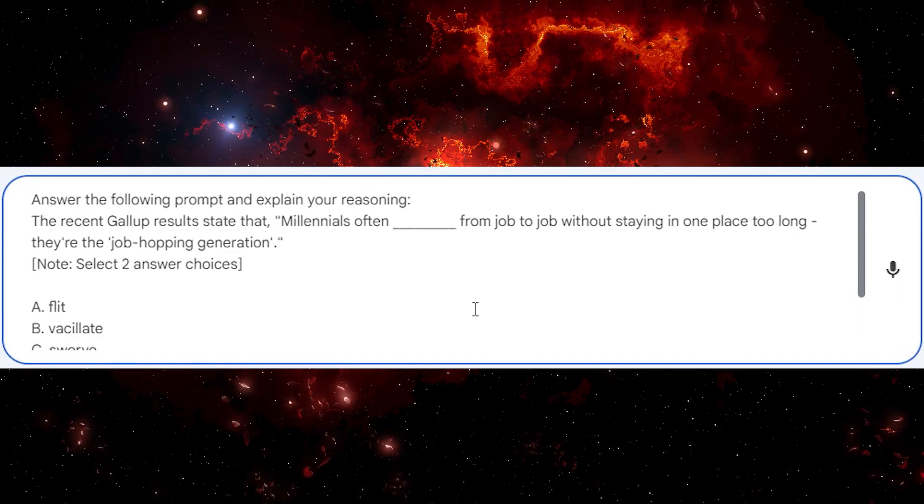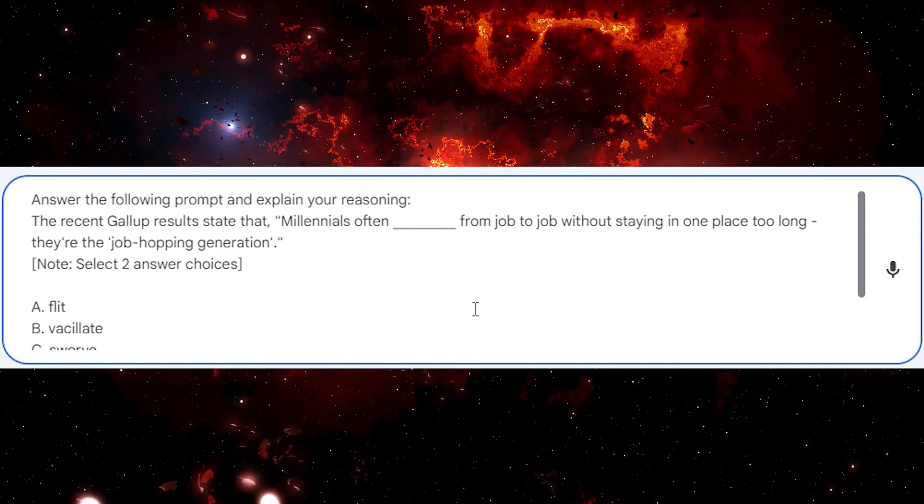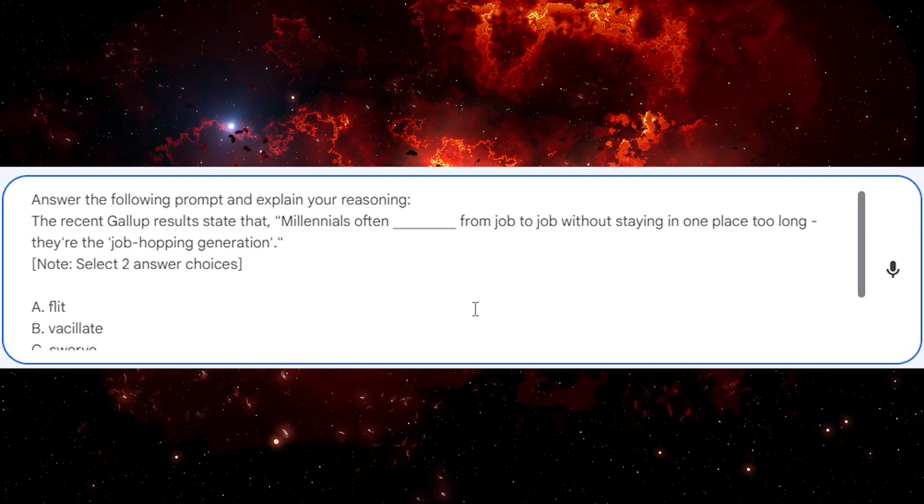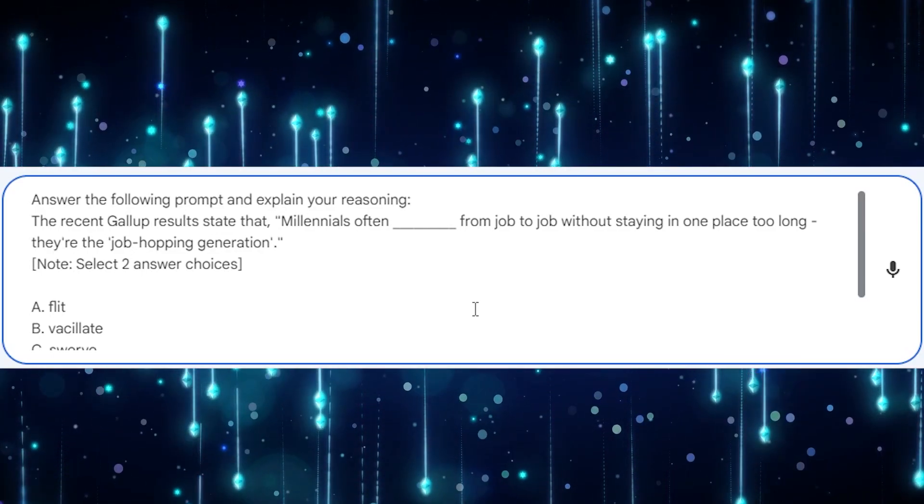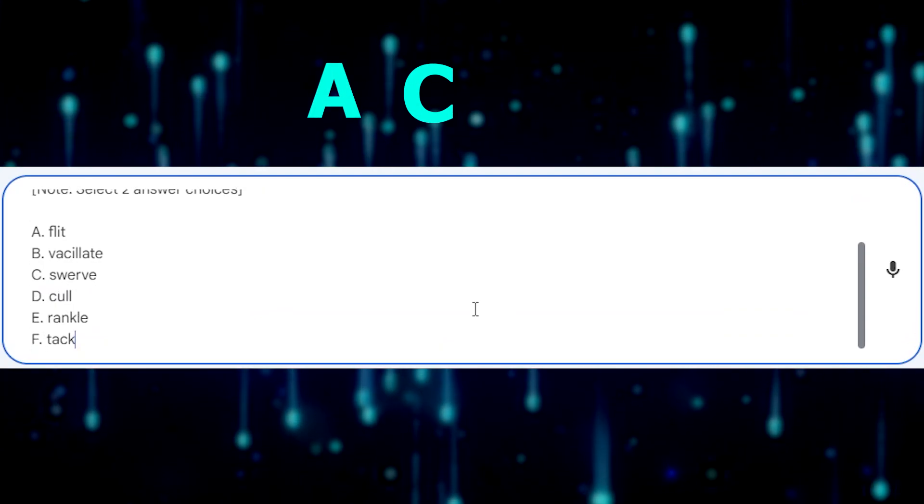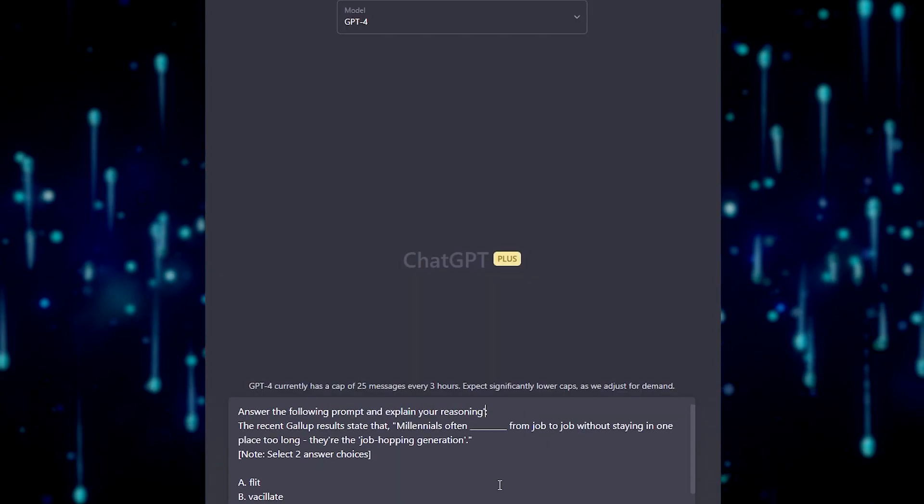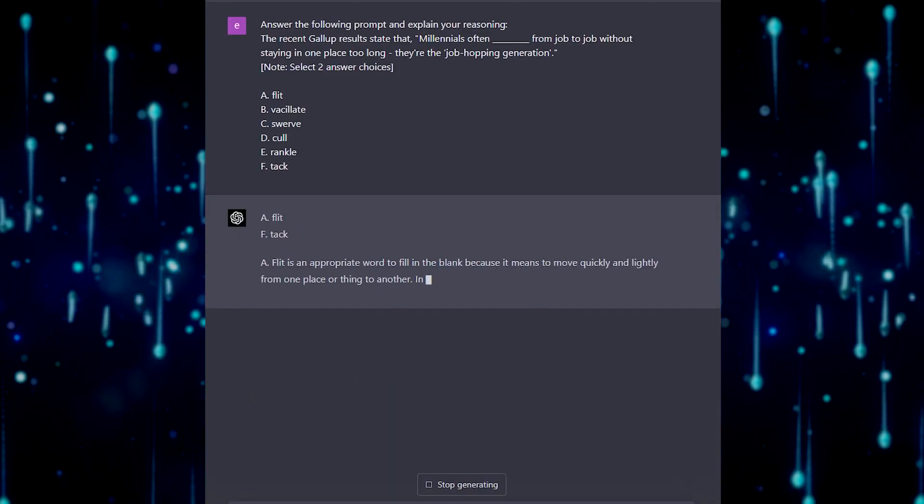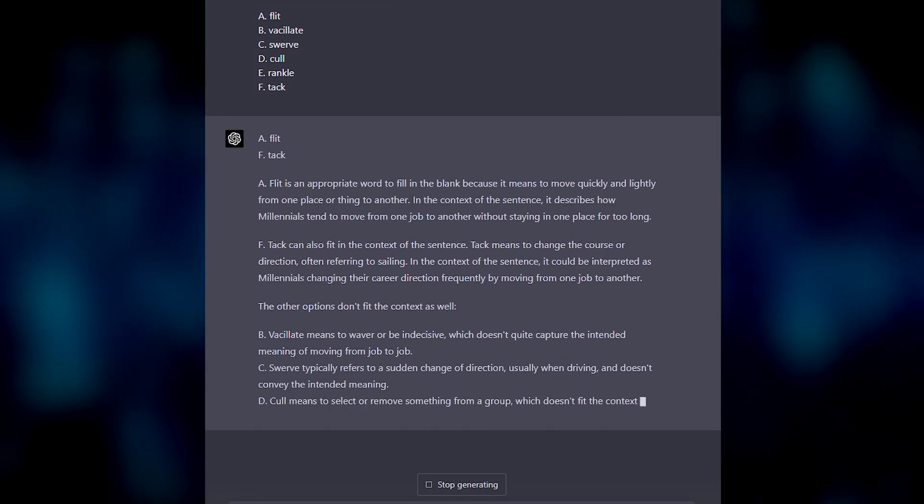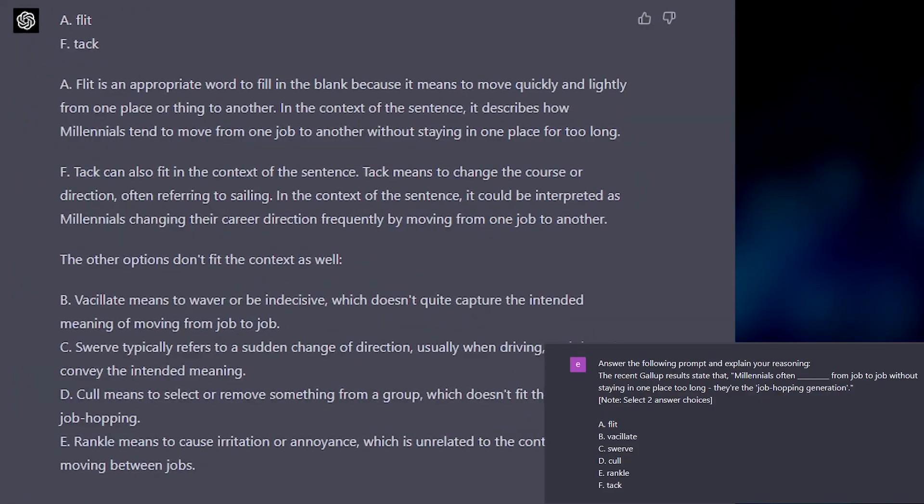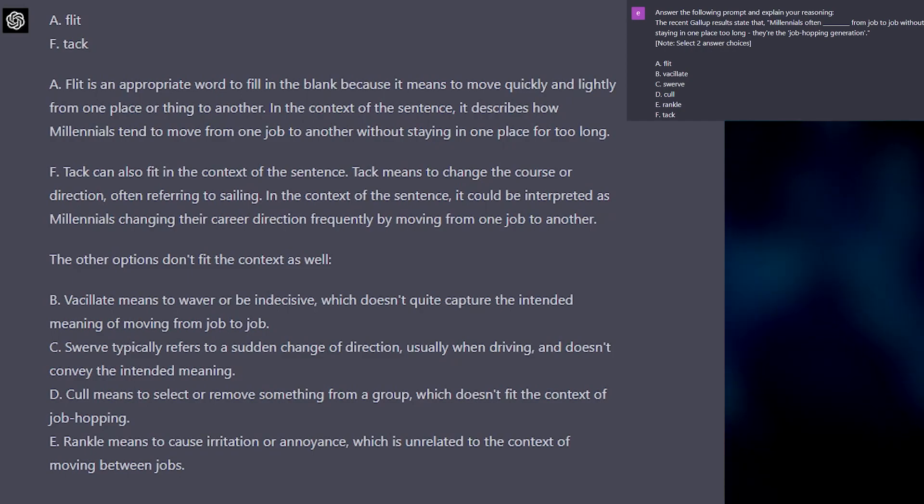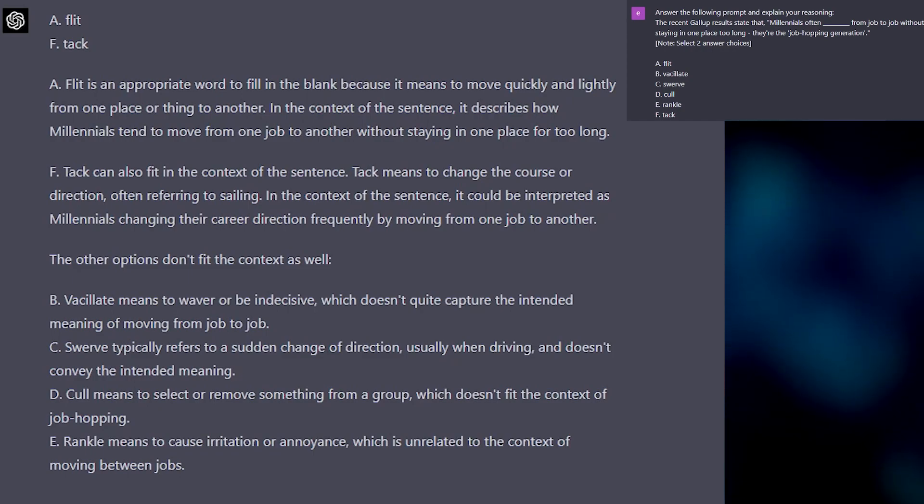Answer the following prompt and explain your reasoning. The recent Gallup results state that millennials often, blank, from job to job without staying in one place too long. They're the job hopping generation. Note, select two answer choices. This one has two answers. They are A and C. Obviously, don't question it. We'll start with GPT-4 this round. It concluded A and F. So if my quantitative reasoning is correct, that is half correct. Apparently, tack fits better because of changing course due to boats, and C is not correct because of changing course due to cars.